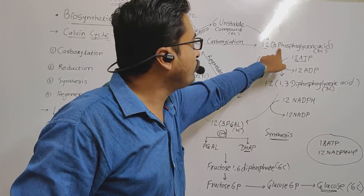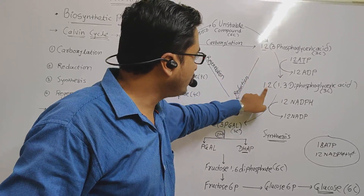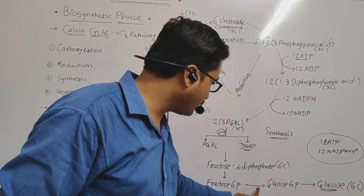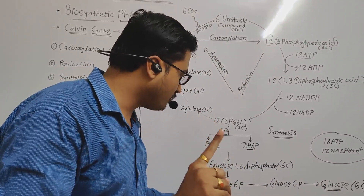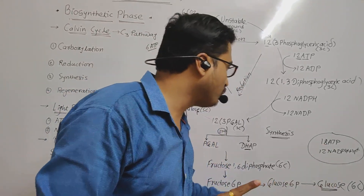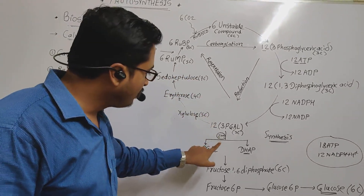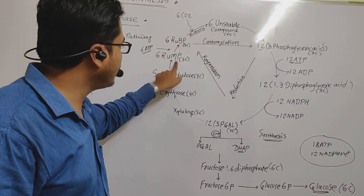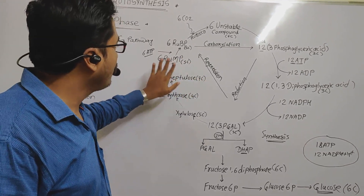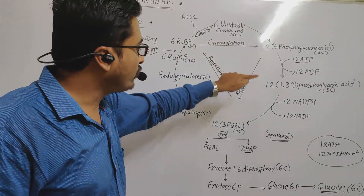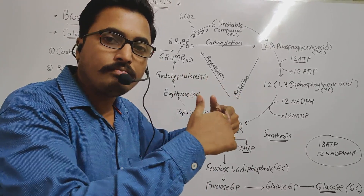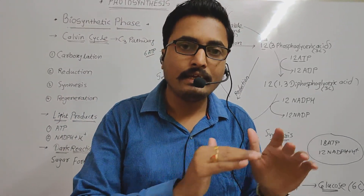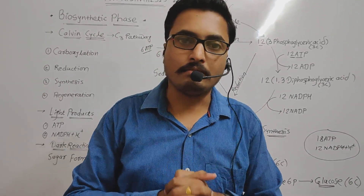The numbers like 1 and 3 in compound names like 3-phosphoglyceric acid indicate the position of the phosphate group, while other numbers indicate the quantity of molecules. From 36 total carbons: 6 carbons continue into glucose, and 30 carbons continue into regeneration to form 6 molecules of RuBP. After 6 turns of the Calvin cycle, 1 molecule of glucose is formed. In the next session, we will cover C4 plants, their Kranz anatomy. Thank you.